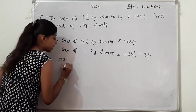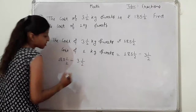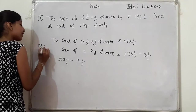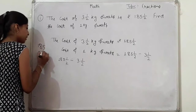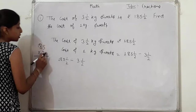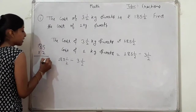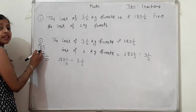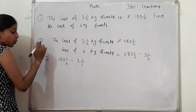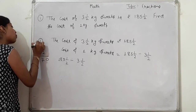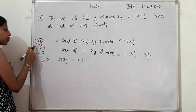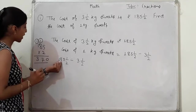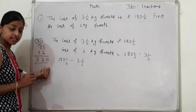हम vector में कर चुके हैं। पहले mixed fraction को solve करो। 180 की 2 से multiply — 2 5's are 10, 0 यहाँ, 1 carry। 2 8's are 16, 16 plus 1 = 17, 1 carry। 2 1's are 2, 2 plus 1 = 3।